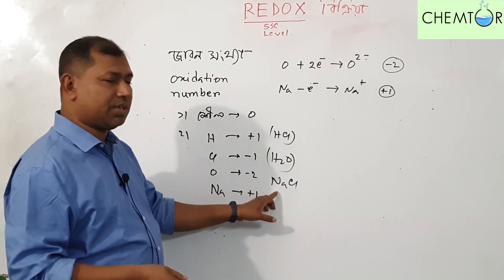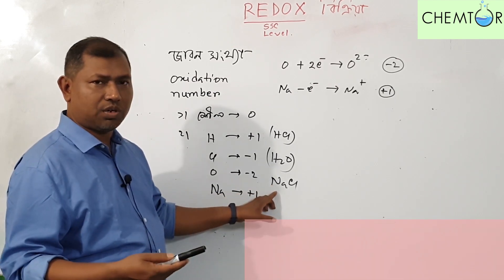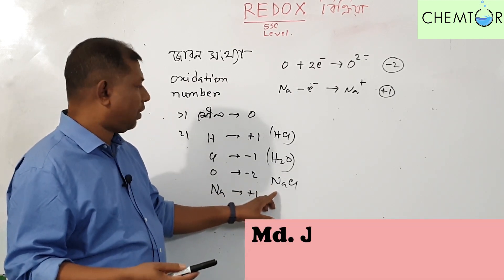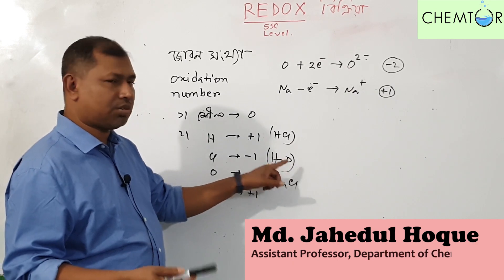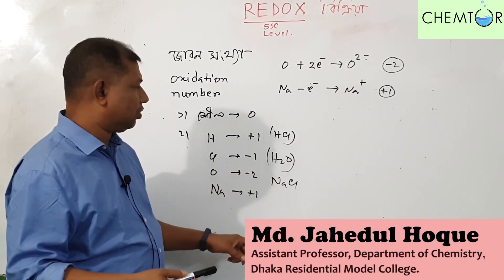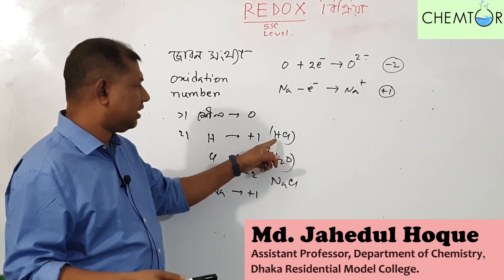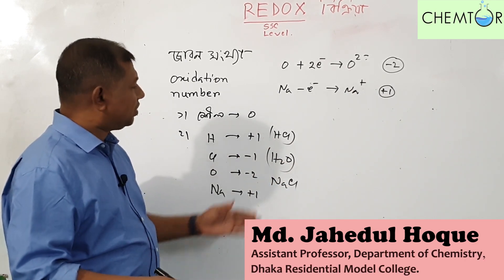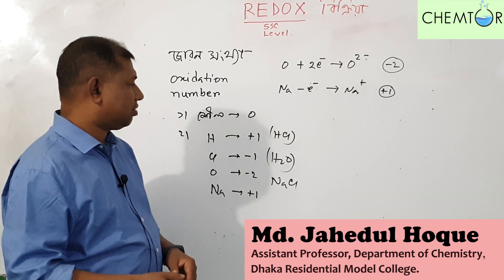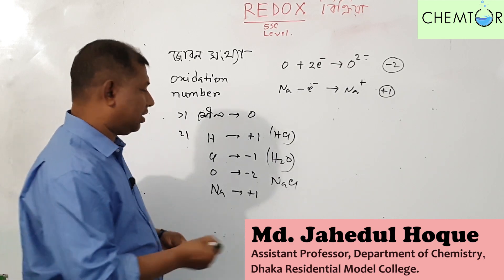When sodium chloride is used, it is plus 1. When oxygen is used, it is minus 2. When HCl is used, hydrogen is plus 1.